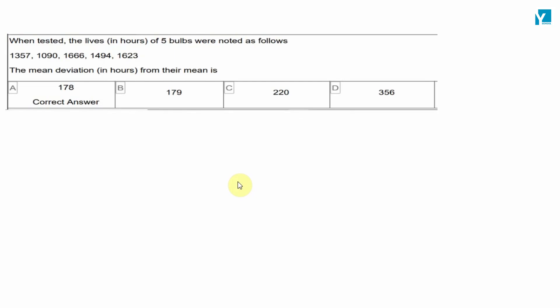Next question is: when tested, the lives in hours of 5 bulbs were noted as follows: 1357, 1090, 1666, 1494, and 1623. Then the mean deviation in hours from their mean. We need to find mean deviation.